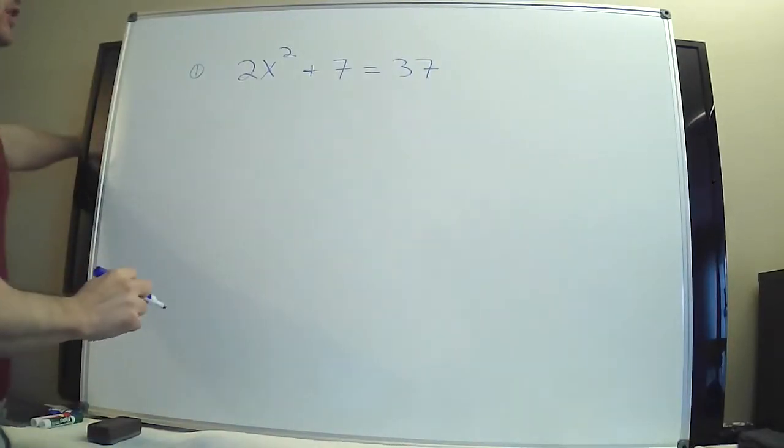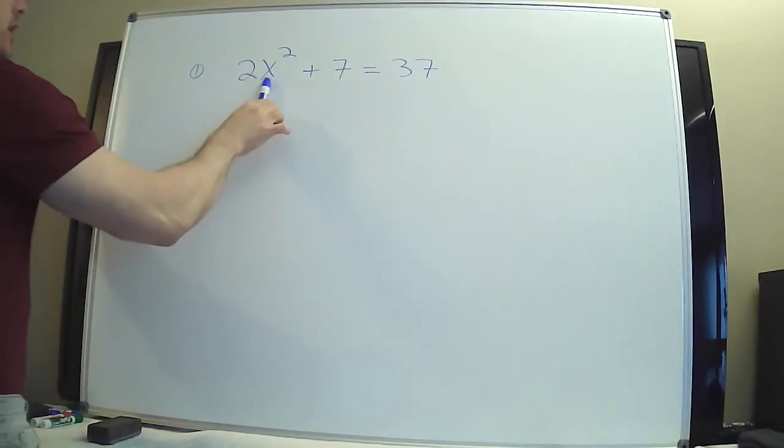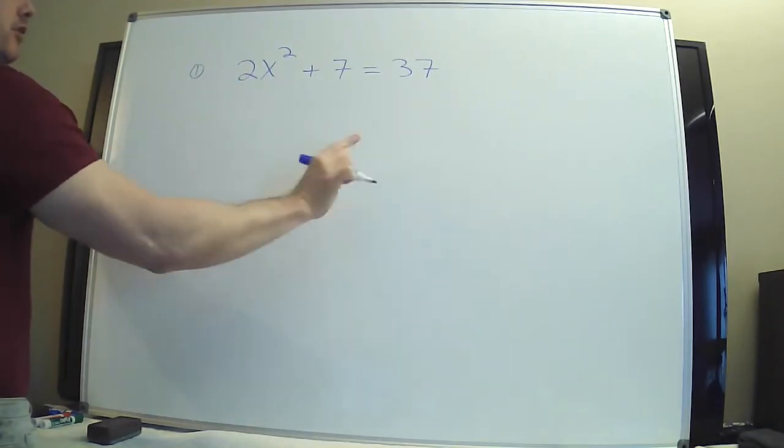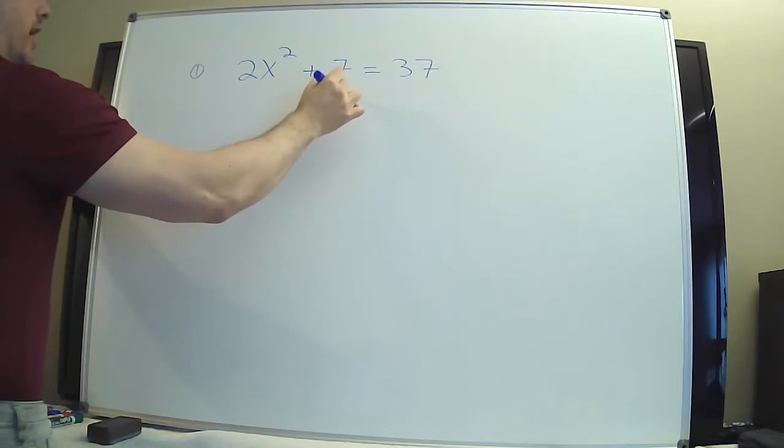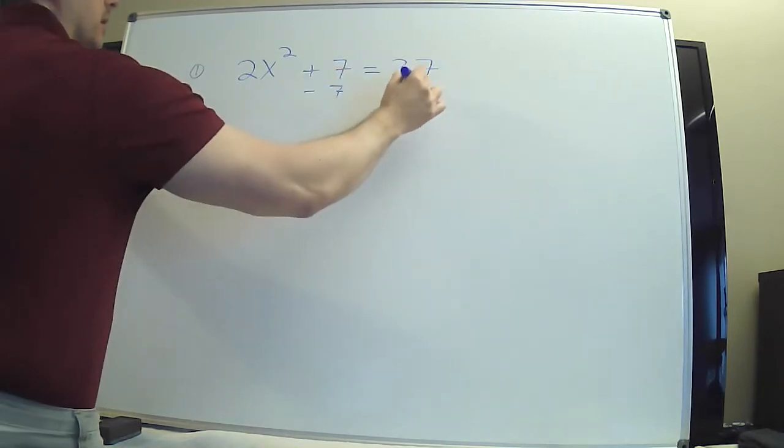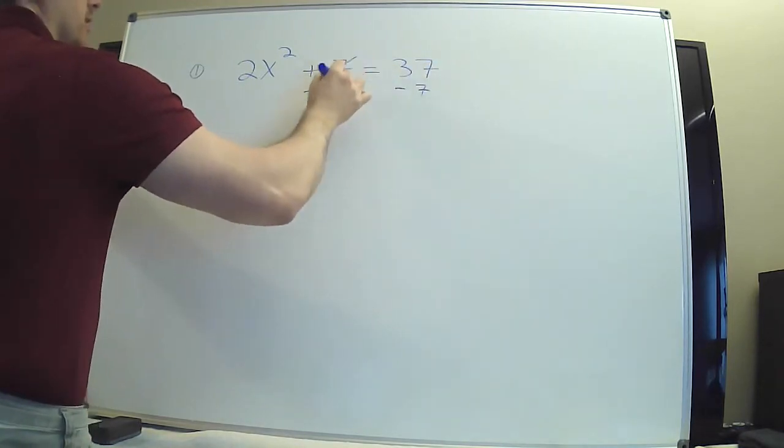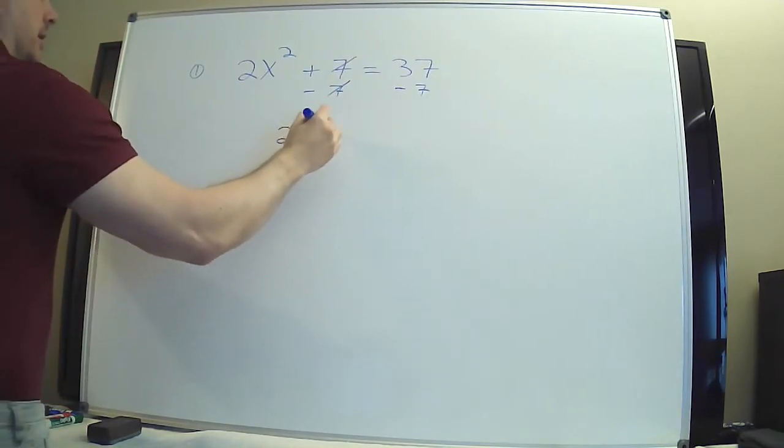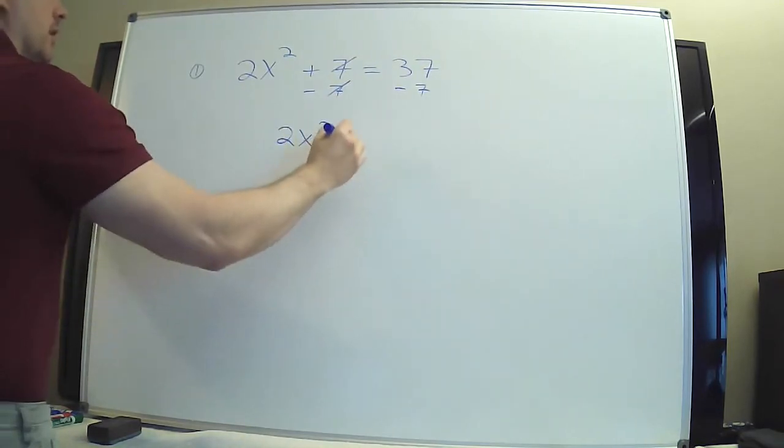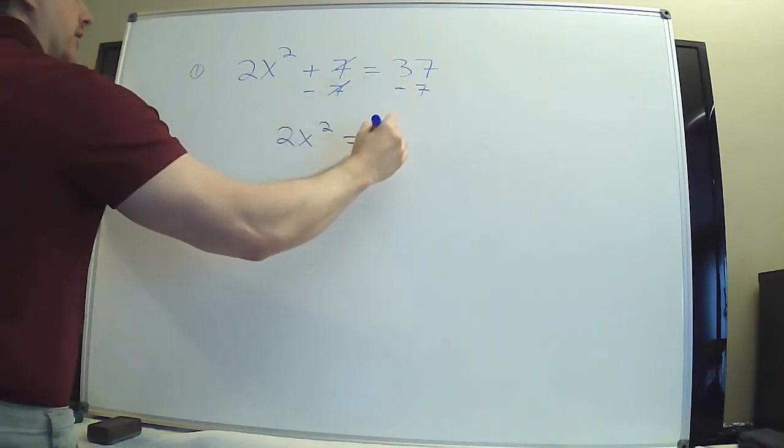Okay, question number one of the square root sheet. Goal: get the x squared alone on the left so you can take the square root of both sides. So I have to eliminate the plus 7 by doing minus 7 to both sides. Cross his out, 7 minus 7 is 0. So 37 take away 7 is 30.